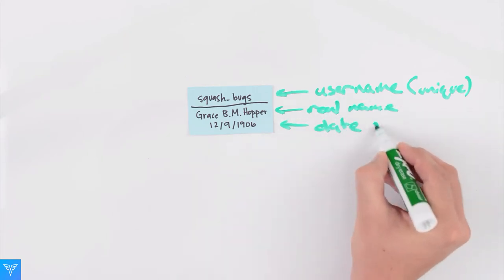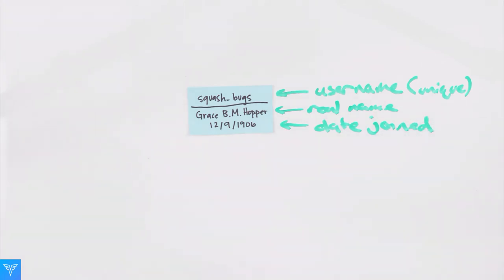When a user comes to our website, they're going to log in using their username, in this case, SquashBugs. We want to use the username to quickly find the other information about this user.